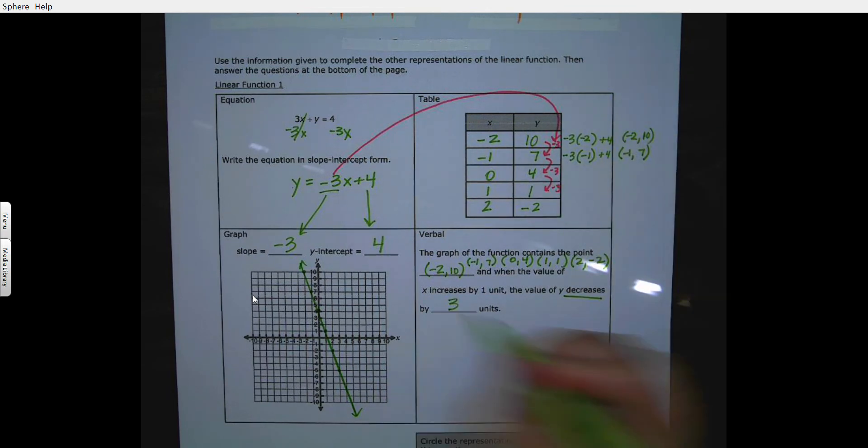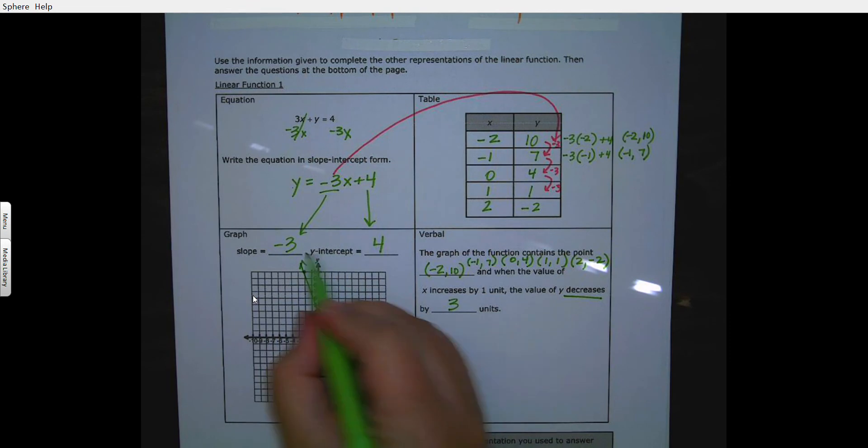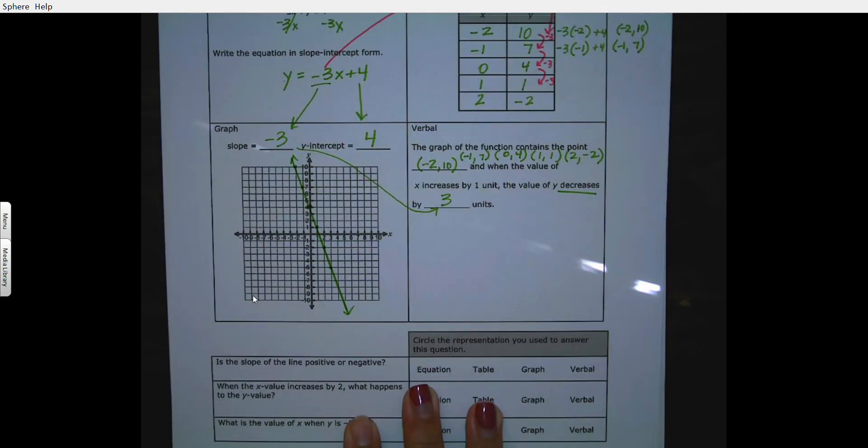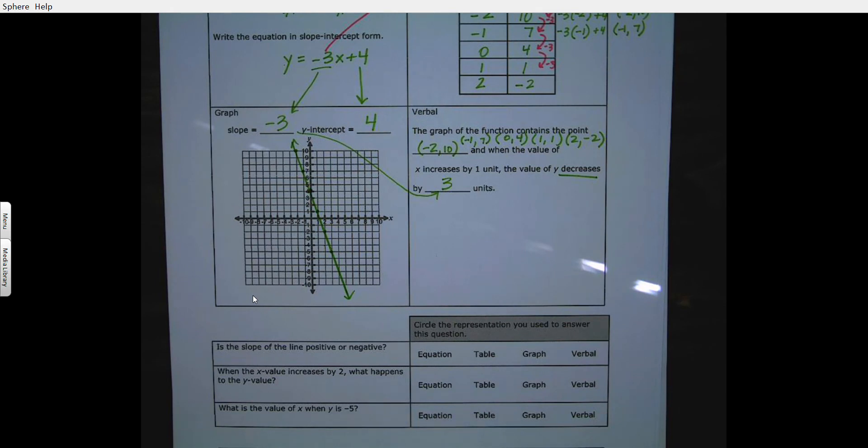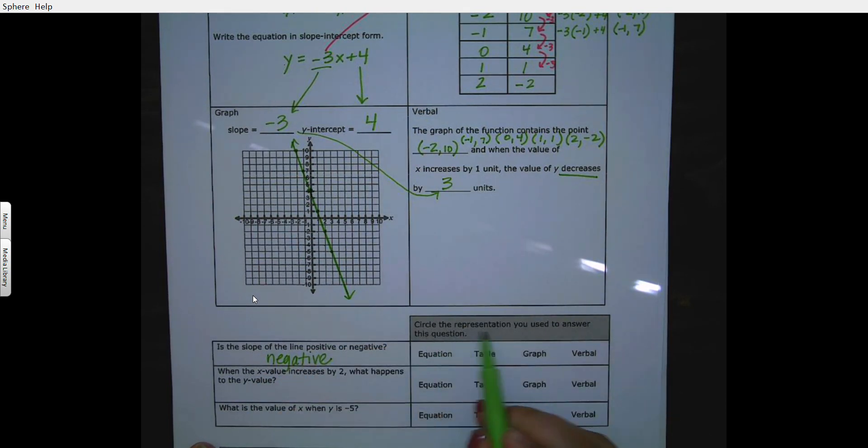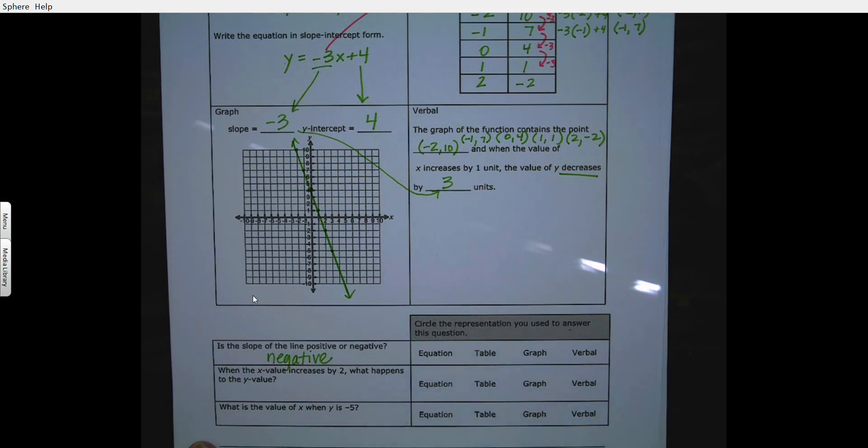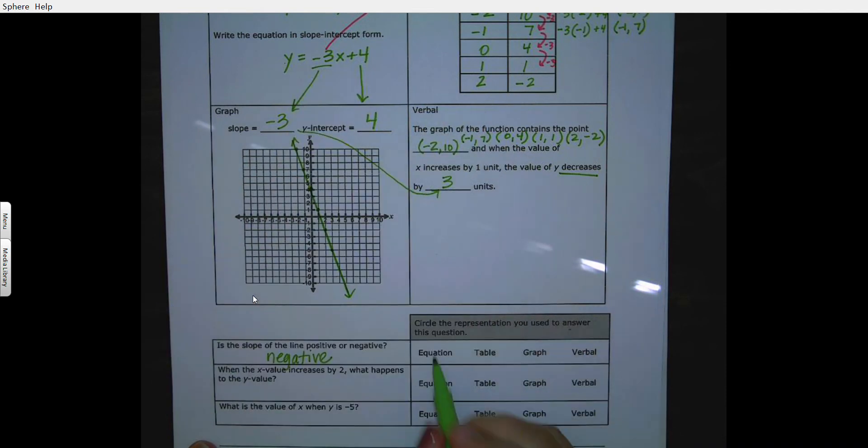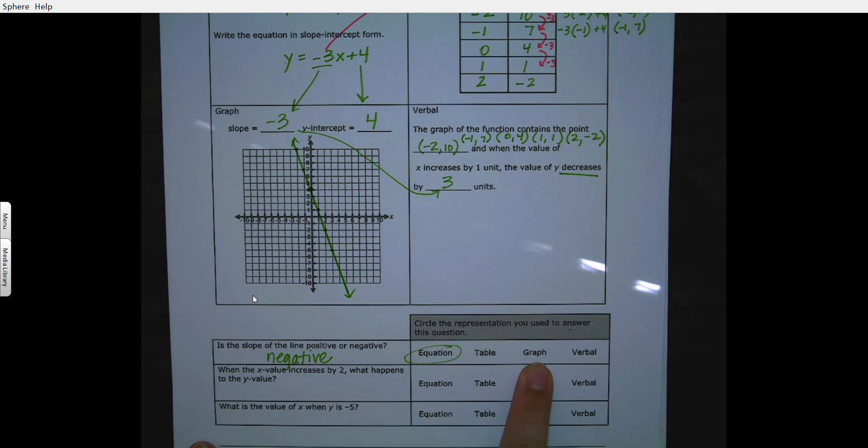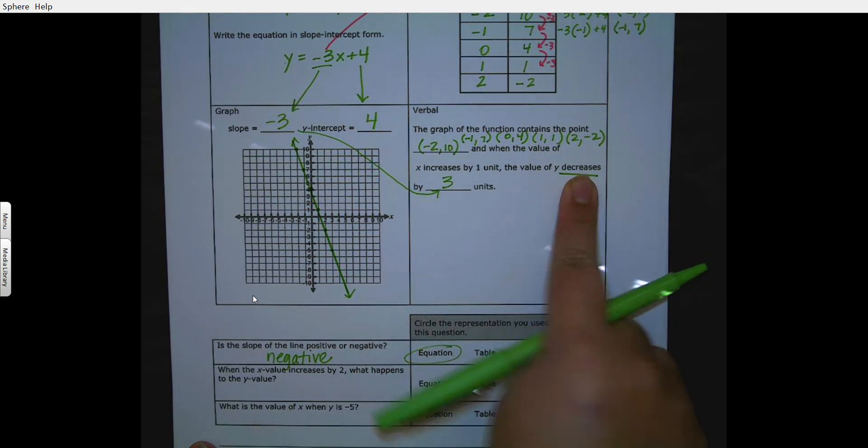Now I need to answer the questions on the bottom. Is the slope of the line positive or negative? My slope is negative and circle which representations you used to find to answer your questions. If I was doing that, I'd find my slope right here in the equation. Some people might have found it on the graph because this is going down. Some people might use the verbal that would be decreased by 3 units. They could use the table here.